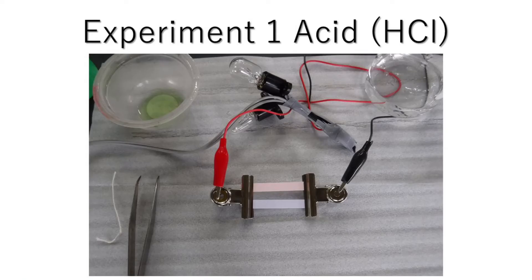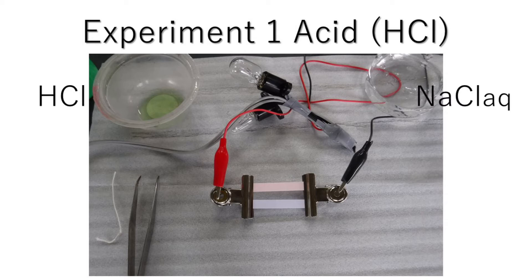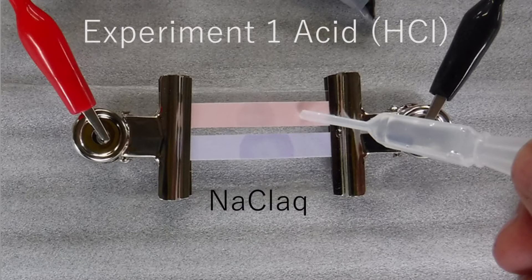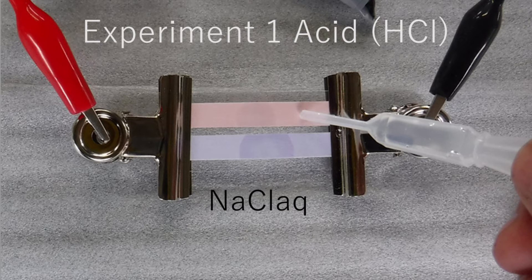Let's do the first experiment with hydrochloric acid. Red and blue litmus paper are used. Salt water is applied to the litmus paper as a neutral electrolyte solution.